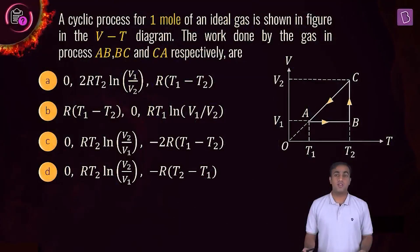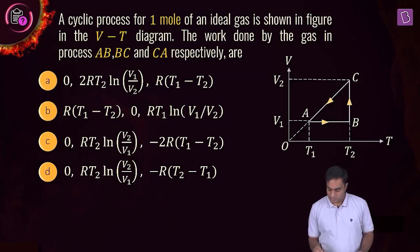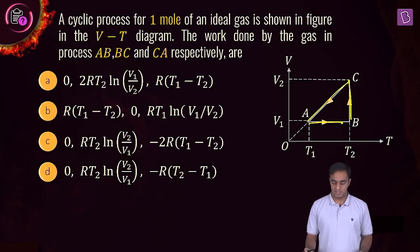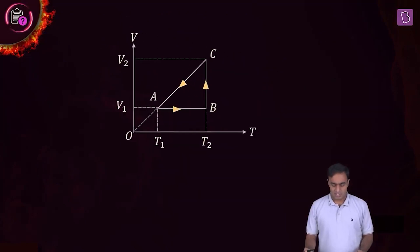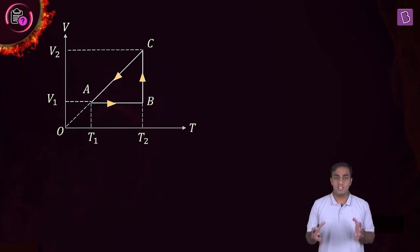The next question is based on the concept of work done in a thermodynamic process. An ideal gas is taken through a cyclic process and the corresponding volume versus temperature graph is plotted and given to you. You are supposed to find the work done in process AB, BC, and CA respectively. Let's look at the graph once again — it is volume versus temperature — and see if we can identify the different processes involved.